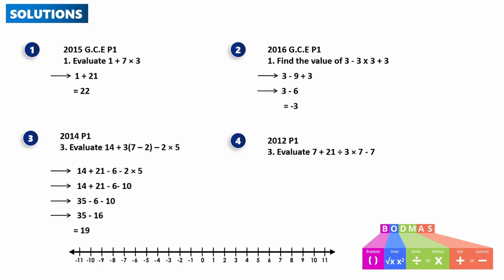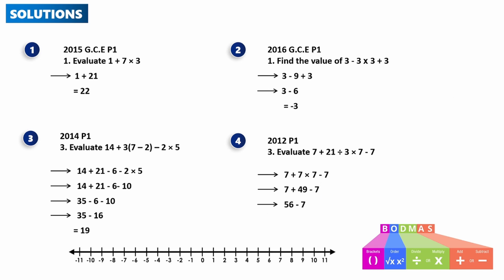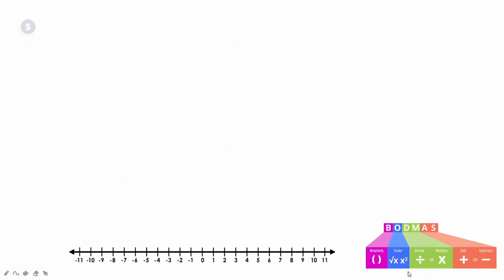Question 4 from Paper 1: evaluate 7 plus 21 divided by 3 times 7 minus 7. Begin with division: 21 divided by 3 is 7. So it becomes 7 plus 7 times 7 minus 7. Multiply: 7 times 7 is 49. Then 7 plus 49 minus 7. Add 7 to 49 to get 56, then 56 minus 7 gives a final answer of 49.